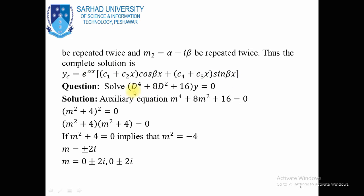Here is an example: (D⁴ + 8D² + 16)y = 0. The auxiliary equation is m⁴ + 8m² + 16 = 0. This factors as (m² + 4)² = 0, because expanding gives m⁴ + 8m² + 16. So m² + 4 = 0 implies m² = -4. Taking square root on both sides, m = ±2iota. Again from m² + 4 = 0, we obtain another root ±2iota. So the roots are complex and repeated.